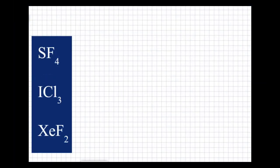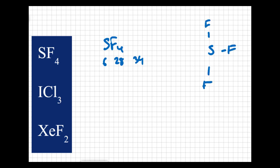Let's begin with SF4. Sulfur has six valence electrons, and each fluorine has seven, so that's 28 electrons in the fluorines, giving us 34 electrons total. With sulfur in the middle and four fluorines bonded to it, I just used eight electrons, so I have 26 electrons left.